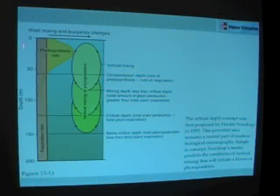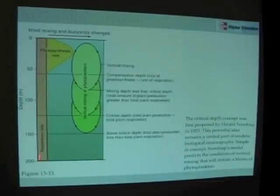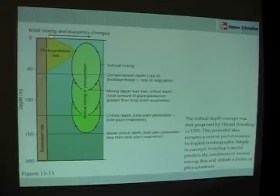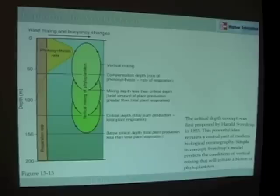A figure will help us understand this concept. This figure shows depth on the z-axis. It also shows a rate of respiration, which we show to be constant through the water column. And a rate of photosynthesis, which reaches a maximum at some depth and then falls off very quickly, as we would normally find in a water column. As you get more phytoplankton occurring, they begin to shade the ones beneath and light intensities drop off, so rates of photosynthesis drop off.